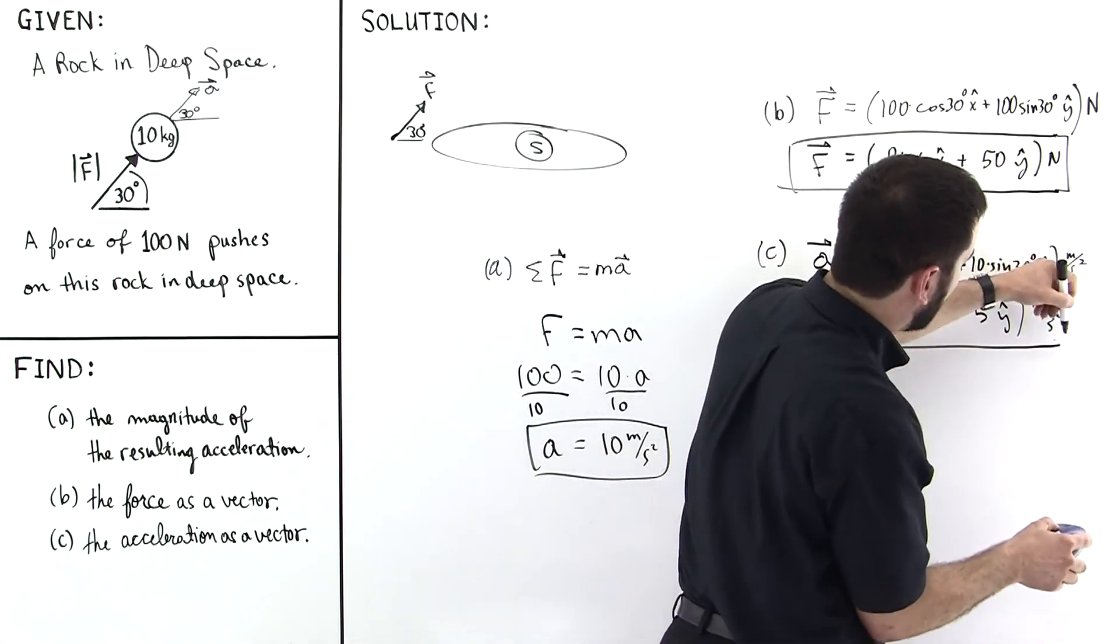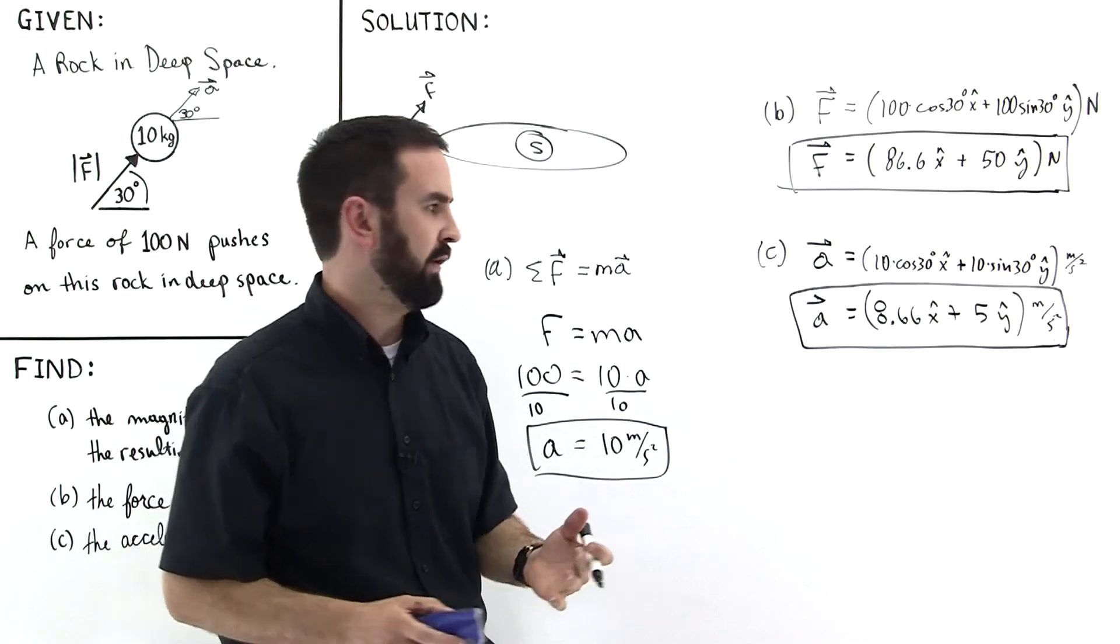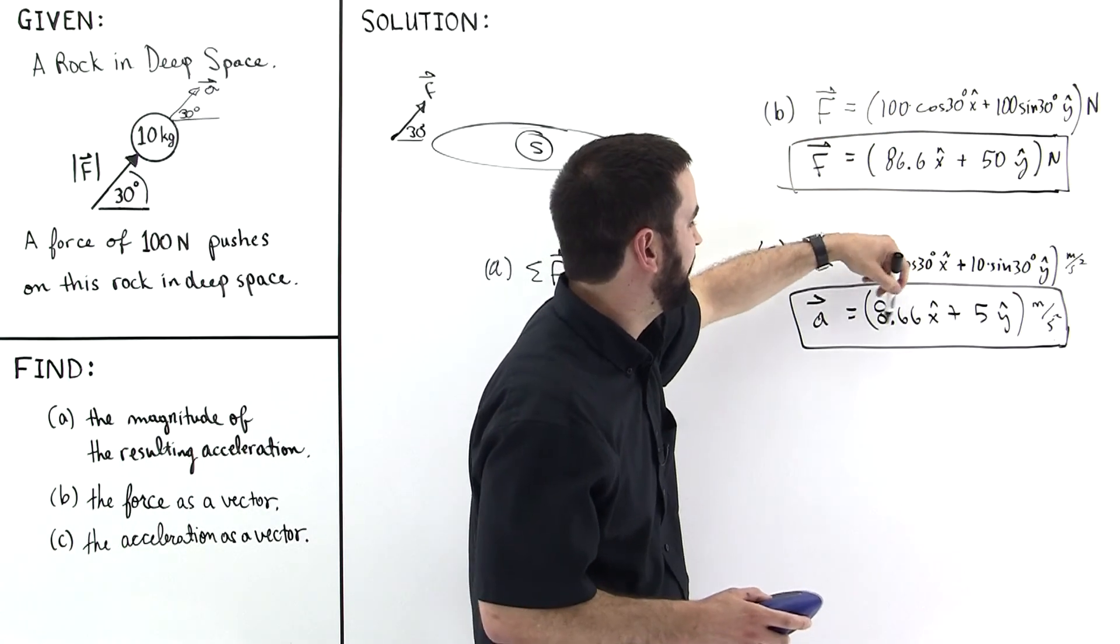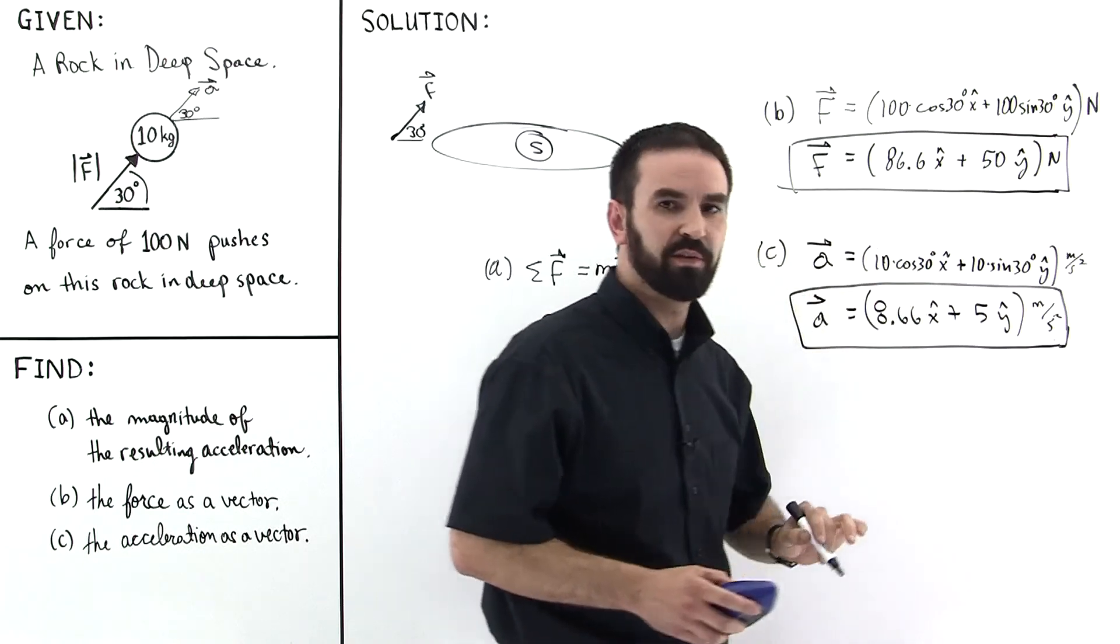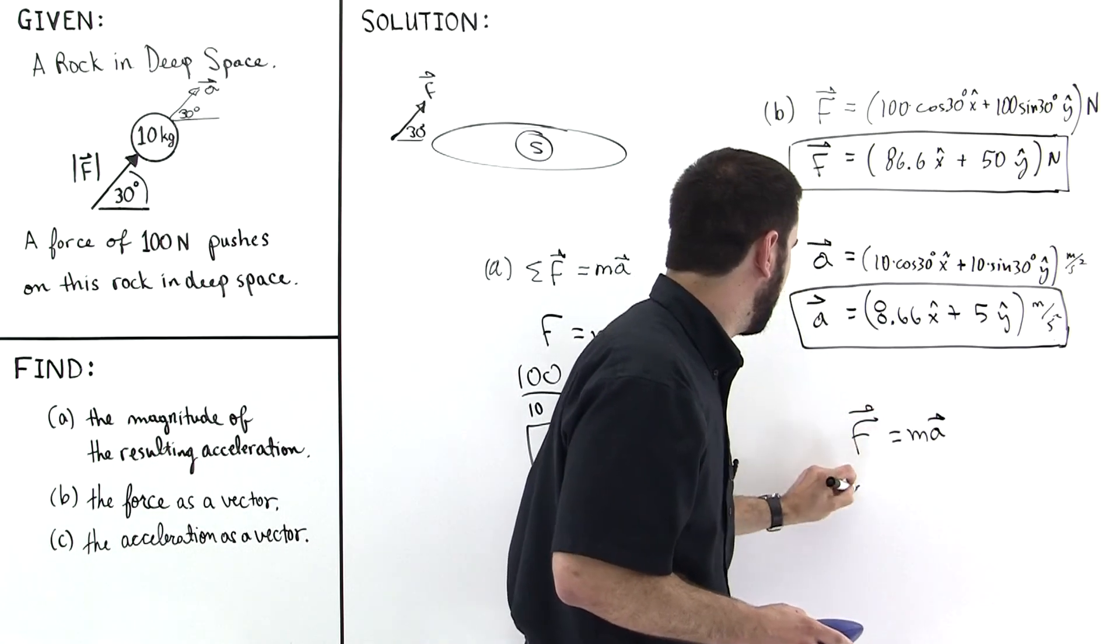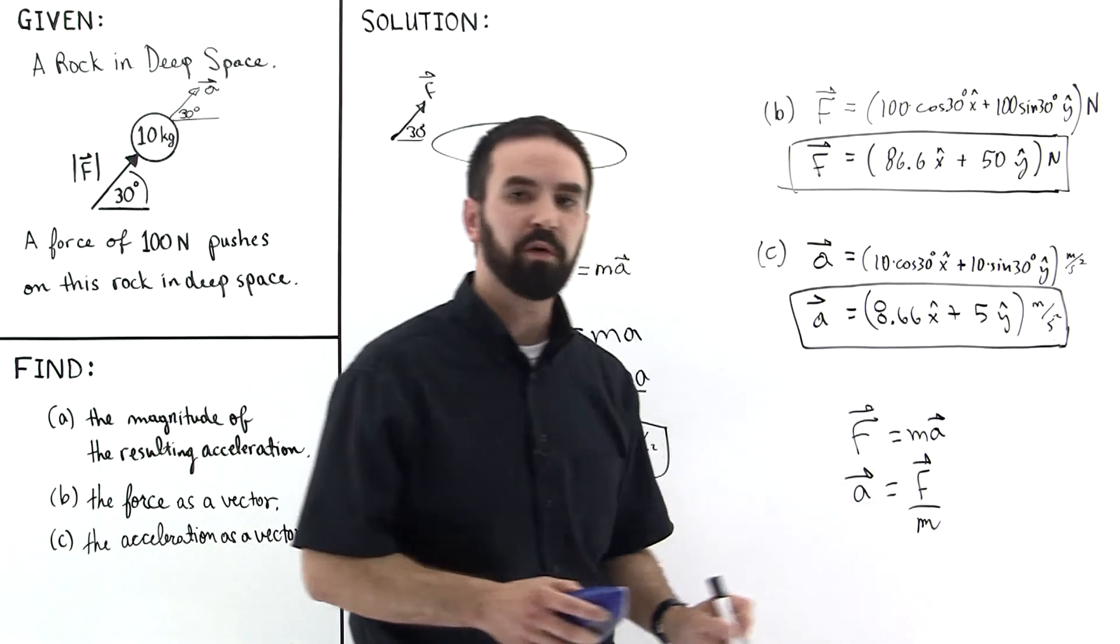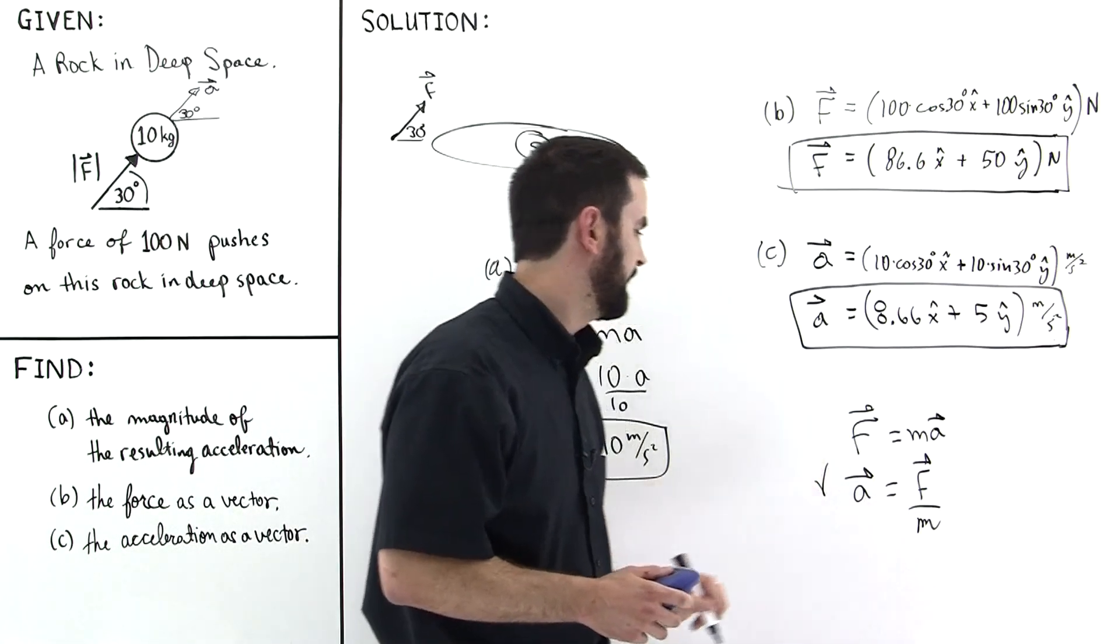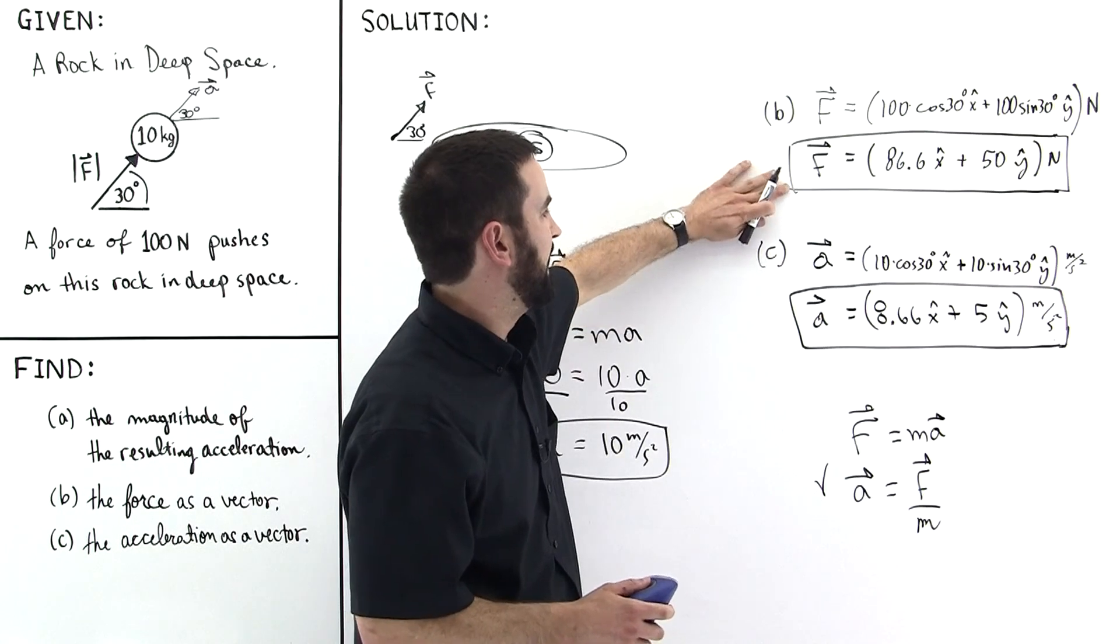So Newton's second law says f equals ma. Notice that the components are proportional to one another. Notice that f of x is equal to the mass, which is 10 times the acceleration in the x direction. 10 times this equals this. And 10 times this equals this. In fact, Newton, whenever he first wrote down his second law, he said the acceleration of the object is proportional to the motive force impressed and inversely proportional to the mass of the object. So he said it like this. And we see that that's true. We see that this divided by 10 gives this. And it's true for each component.